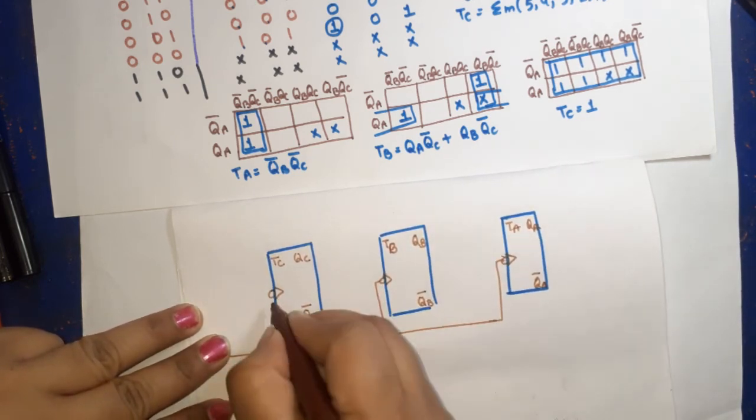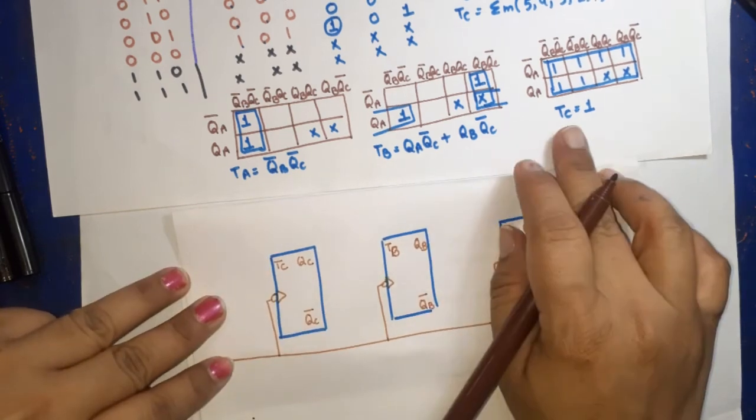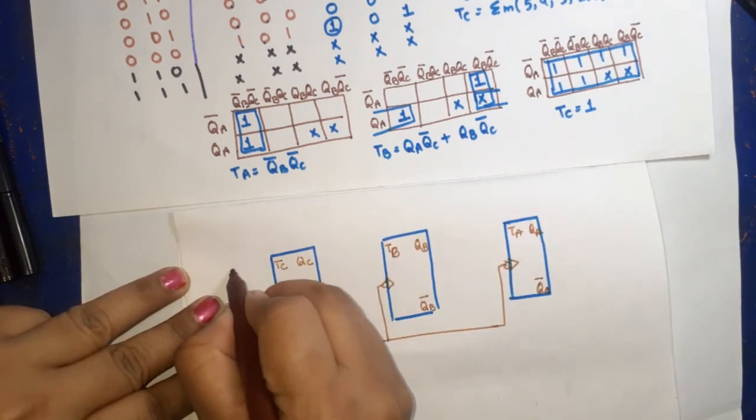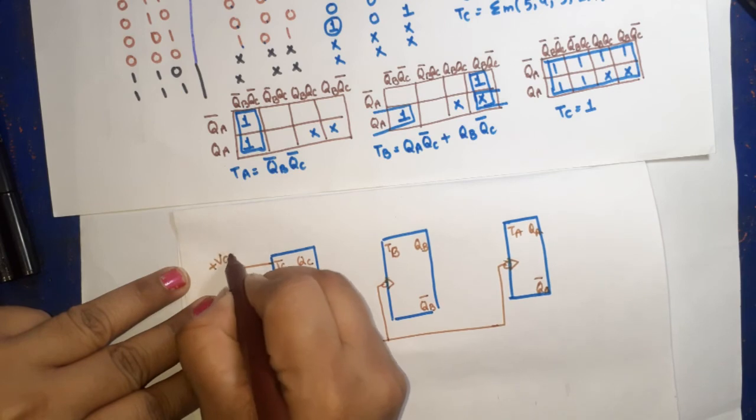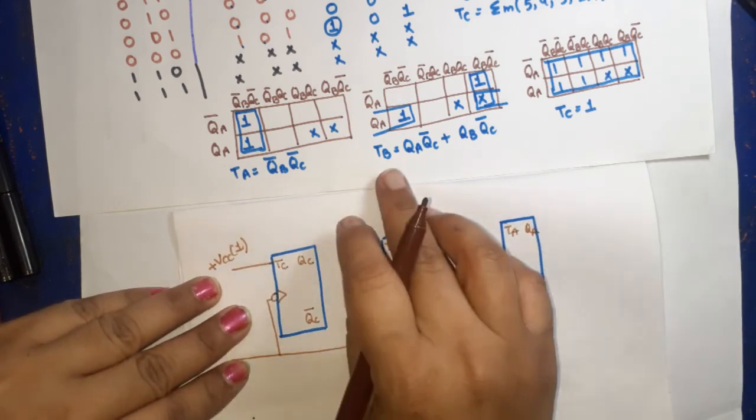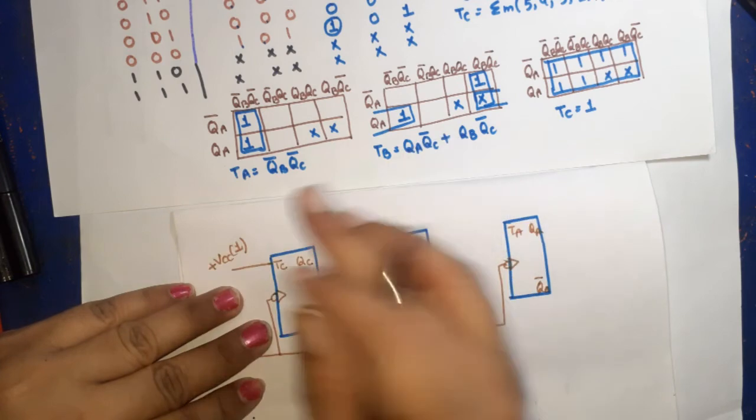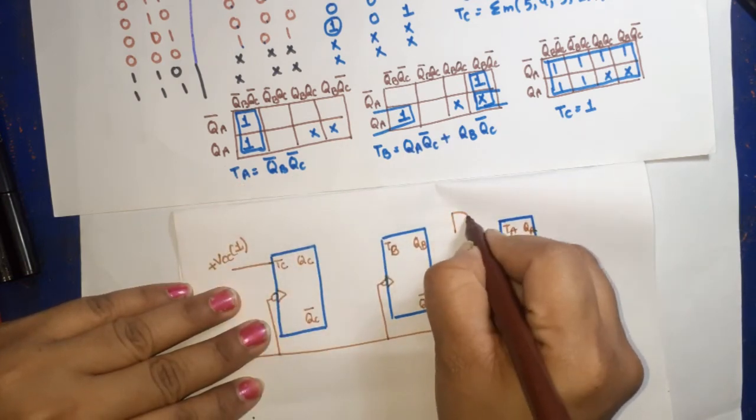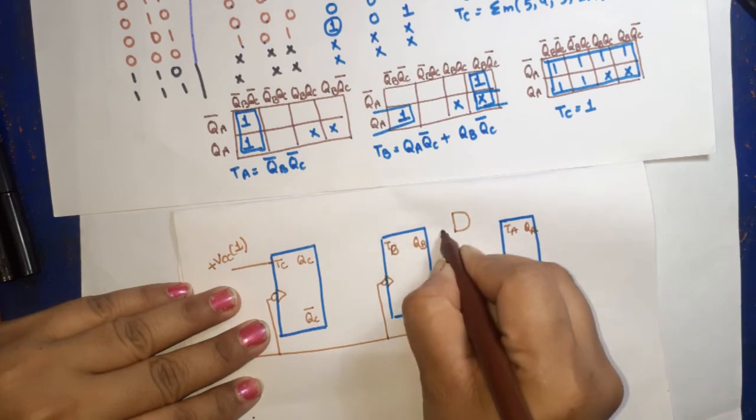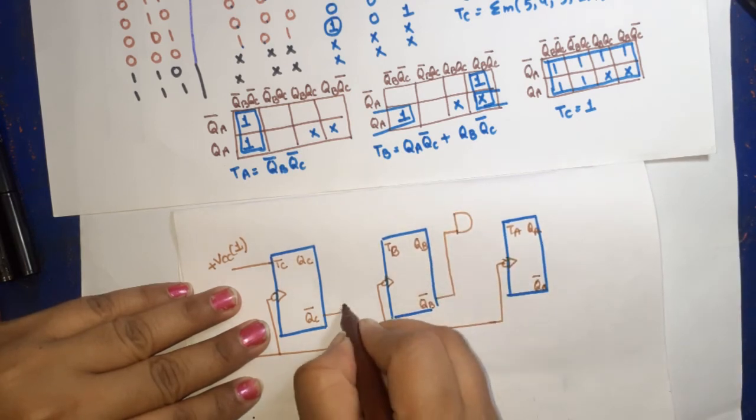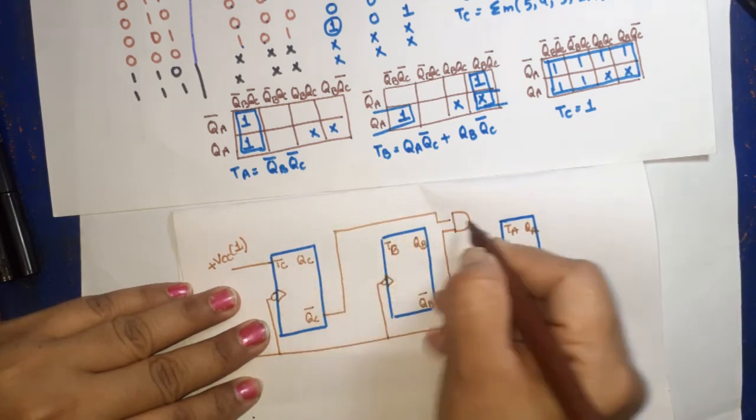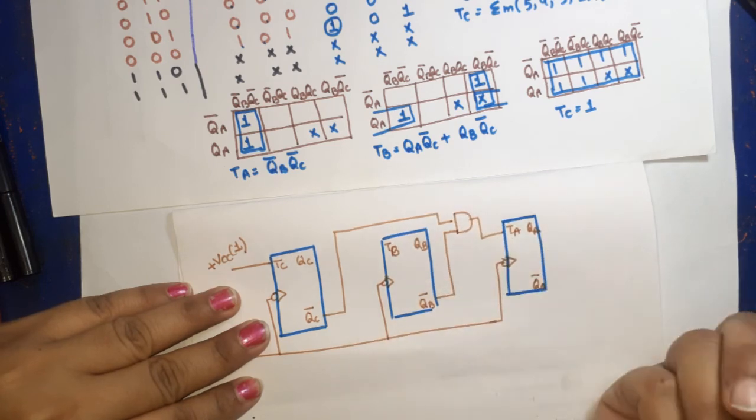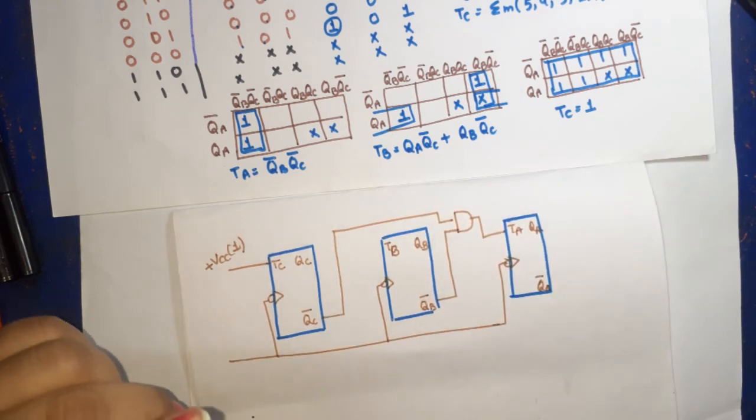From the equations, TC equals 1, so we have connected TC to VCC or logic 1. Now what is the value of TA? TA is simple: TA equals QB bar QC bar, so we have used an AND gate here. First input is QB bar, second input is QC bar. The output of this works as input TA.